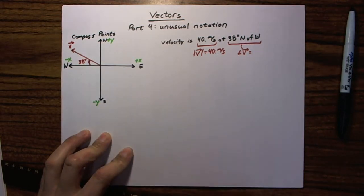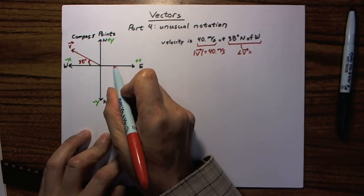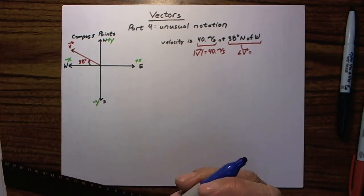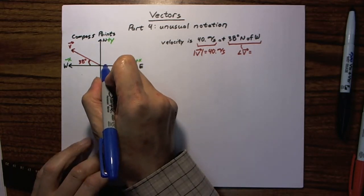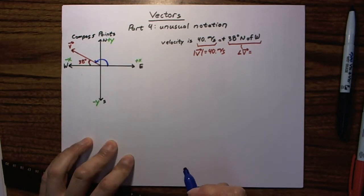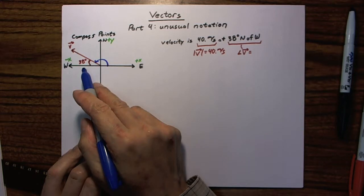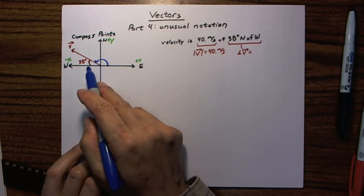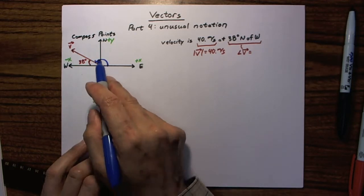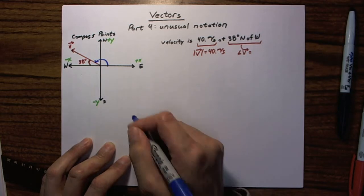But that's not the actual direction of the vector. Remember, directions start at the plus x axis and rotate counterclockwise. So, start at plus x, rotate over to here. And, if you realize that from east to west is 180 degrees, and then we're rotating 38 degrees backwards from there, then this blue angle here that I've drawn is 180 minus 38, or 142 degrees.